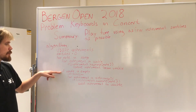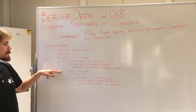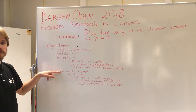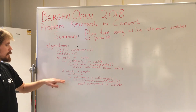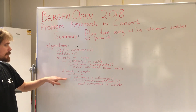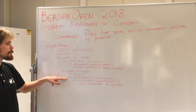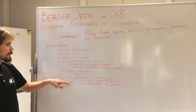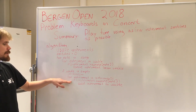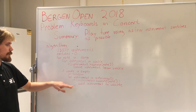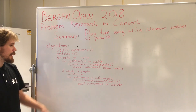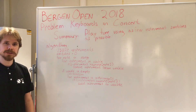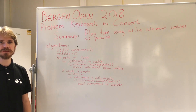Then, if the usable list is empty, this means we have to change the instrument. So we increment switches, and then for each instrument in the full instrument list, we check if the instrument can play the note, then we can add it back to usable. And at the end, we simply print out the number of switches.